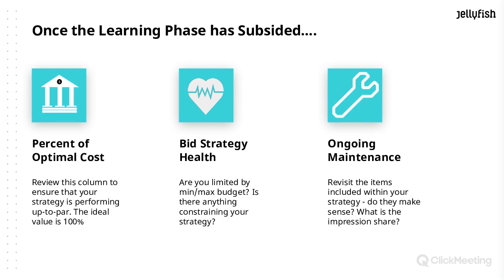Once you have it set up and the learning phase has subsided, what's next? First, you'll see a column for percentage of optimal cost, which will be available within the strategy section. This will basically tell you how your strategy is performing. In a perfect world it would be 100%, which means you're both efficient and effective with no inefficiency. If it's above or under, it just means there is room to make improvements — keep tabs on that column.